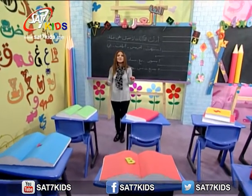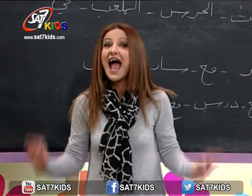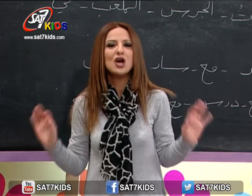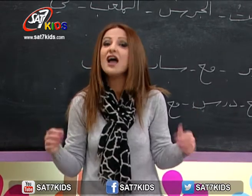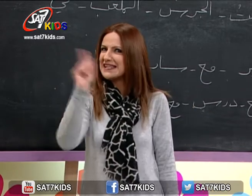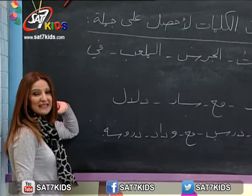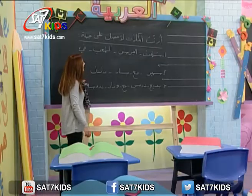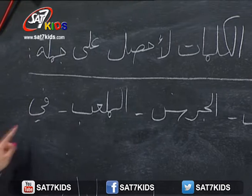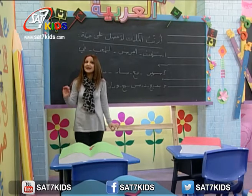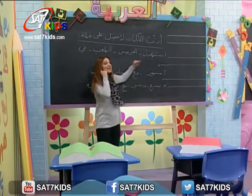حضرتوا الورقة أو القلم؟ هلأ بهيدي الفقرة بدنا نركب أنا وياكم جمل مفيدة إلى معنى صحيح. نتذكر أن الجملة معمولة من كلمات مرتبة بطريقة صحيحة إلى معنى مفهوم وبتخلص دايما بنقطة. خلينا نقرأ السؤال: رتبوا الكلمات للحصول على جملة. خلينا نبلش بأول جملة. الكلمات هنن: سمعتوا، الجرس، الملعب، في. منبلش الجملة بالكلمة يلي بتقول شو عم نعمل. شو هي؟ سمعتوا. صح، بنكتبها.